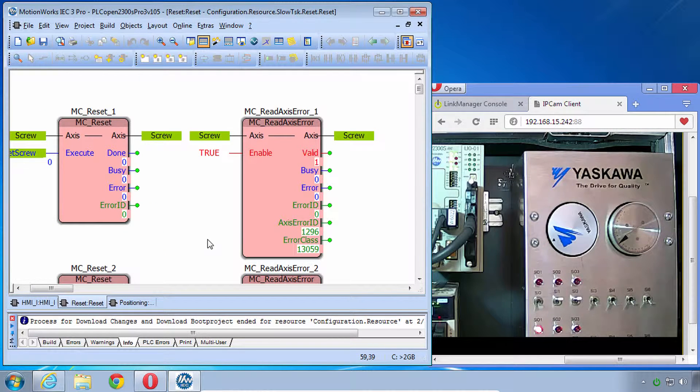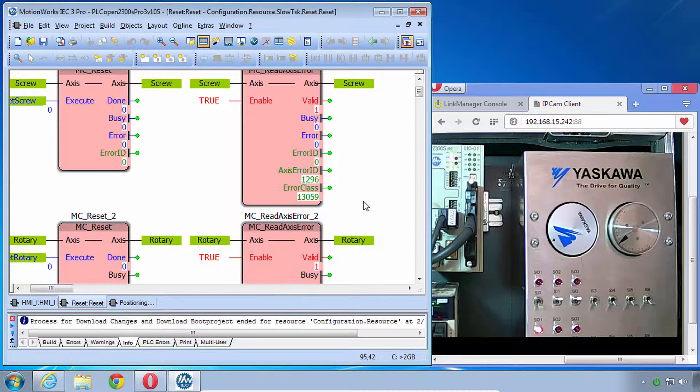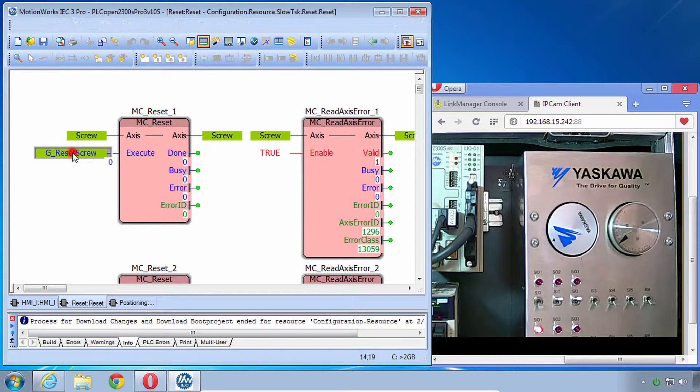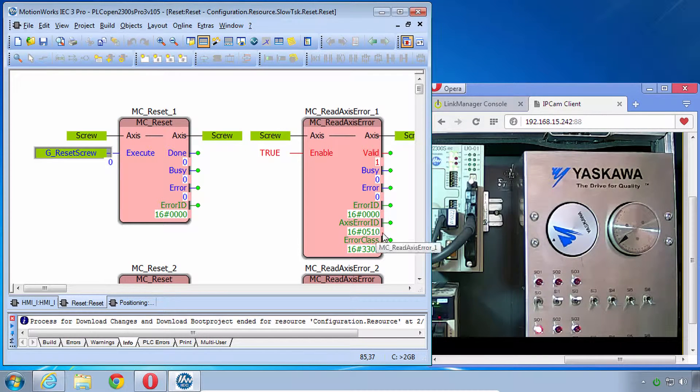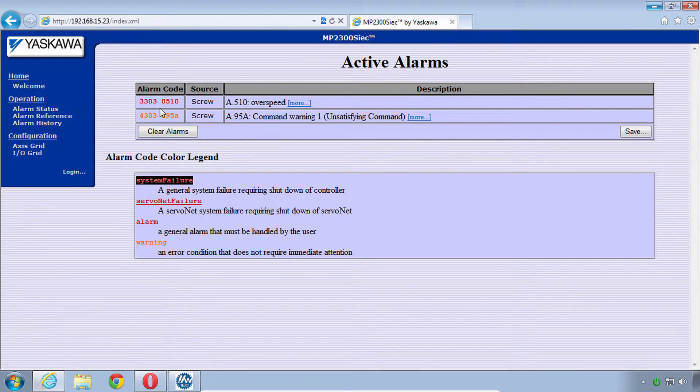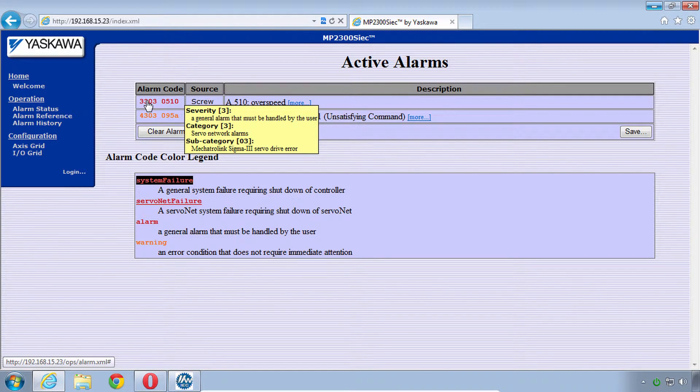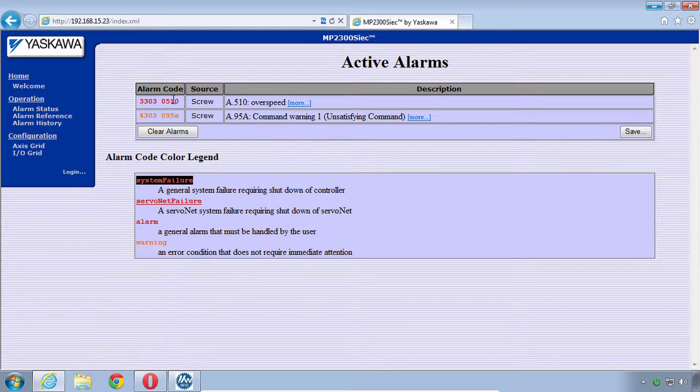And we can confirm that here in the reset POU. But curiously it says that the error ID is 1296. And that's because it's displaying a hexadecimal error code in decimal. But we can force this to display in hexadecimal. Just open any of these variables, like maybe G_Reset_Screw. And there's this value display which can be forced to hexadecimal. This is a software setting. And now we see in hexadecimal 16 pound 510 with the error class 3303. And since I did have the web page up, you'll see that those alarm codes are listed. And there's even a tooltip here 3303. So this is all vendor specific. These codes themselves are up to Yaskawa. And there's two parts to the code. There's the axis error and the error class.